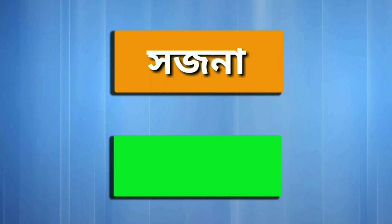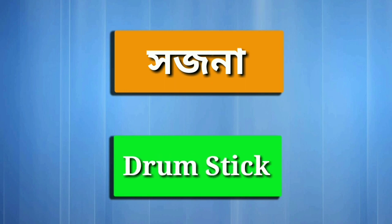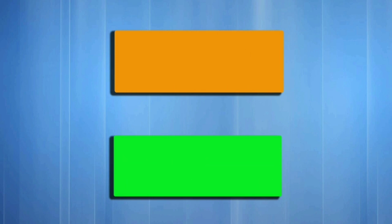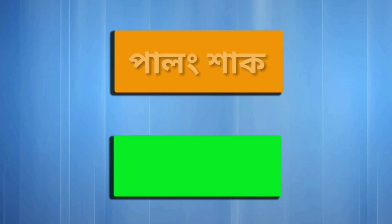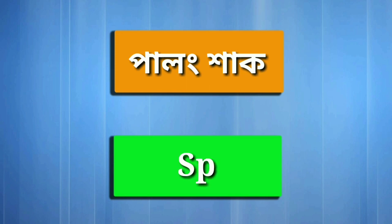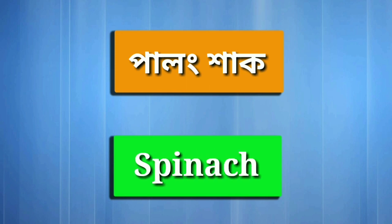Sojna — Drumstick. Seem — Bean. Next one is Palungshak — Spinach.